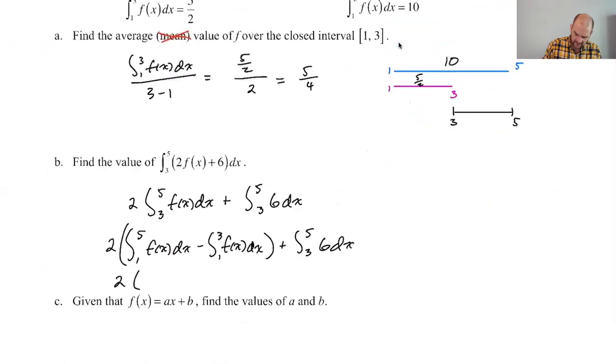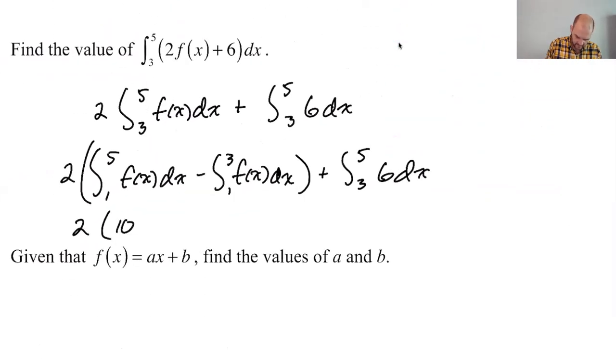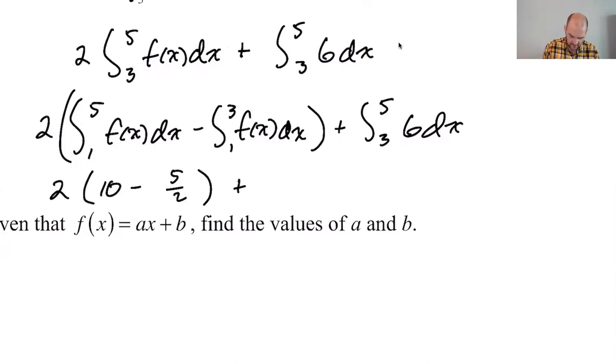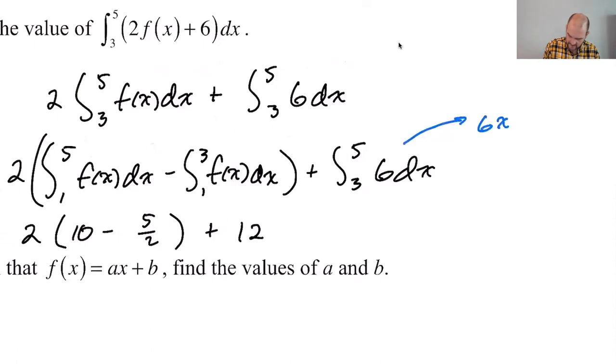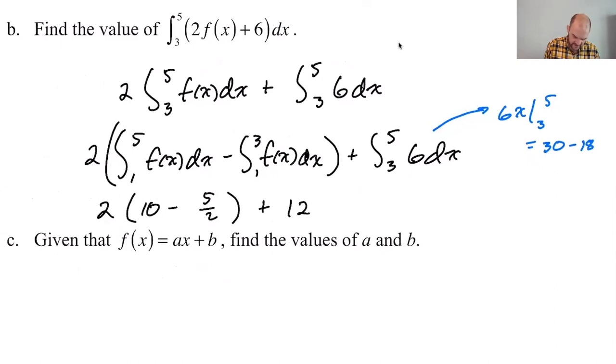So two. The integral from one to five is given as 10 minus five halves, plus. So this is six. I prefer to think this is a rectangle that has a base of two and a height of six. So it's going to give you 12, but you might want to do the fundamental theorem. If you want to do the fundamental theorem, you'd get six x from three to five, which is going to be 30 minus 18. It's still 12. So we get 20 minus 5 is 15, plus 12 is 27. I think we get 27.